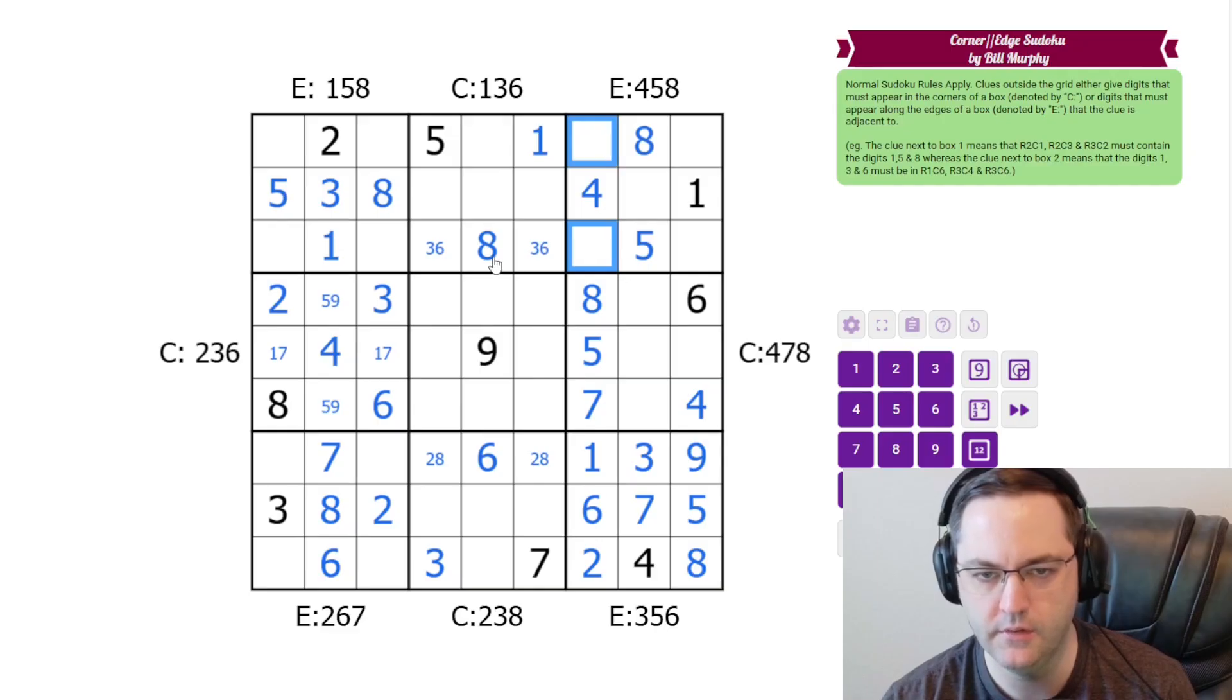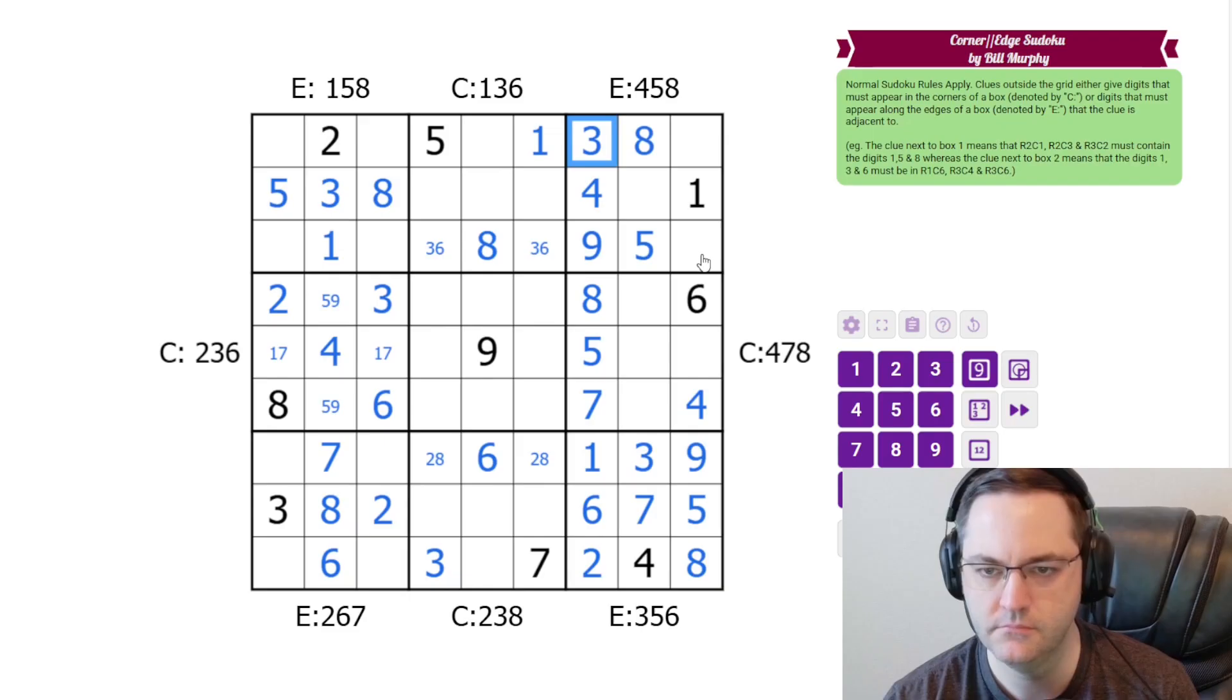3 and 9 here. That is resolved by this 3, 6 pair. 6 can't go in these cells. So it goes here.